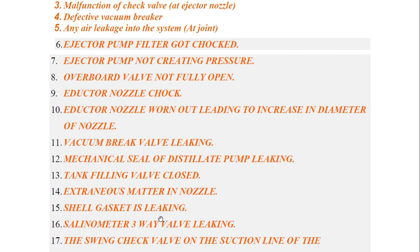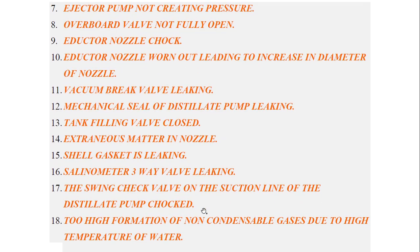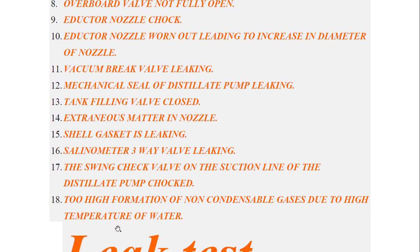Foreign particles or deposits can be present in the shell. Shell gasket leaking — this is an obvious reason; if the gasket leaks, the vacuum will fail. Salinometer three-way valve leaking — there is a three-way valve in the salinometer that can be leaking. The swing check valve on the suction line of the distillate pump choked.